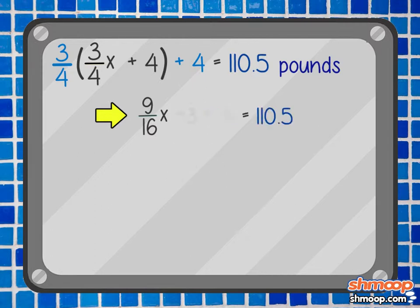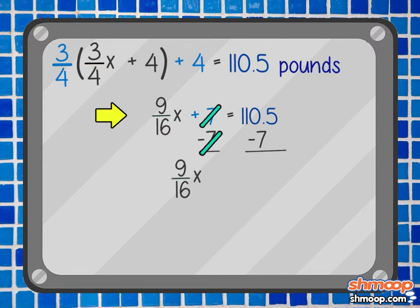Simplify it a bit, and we get nine-sixteenths x plus seven equals 110.5. And now we can subtract seven from each side to get nine-sixteenths x equals 103.5.